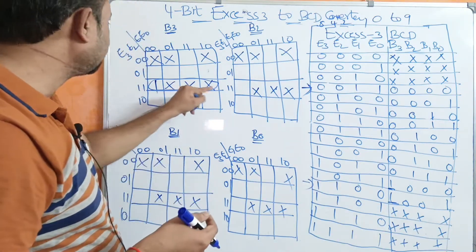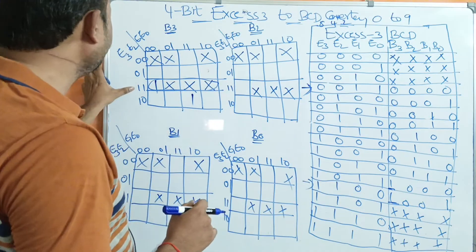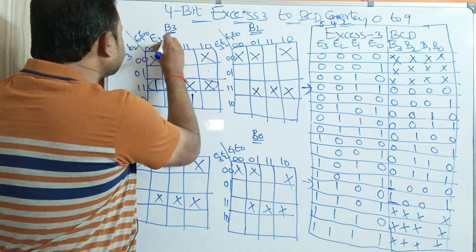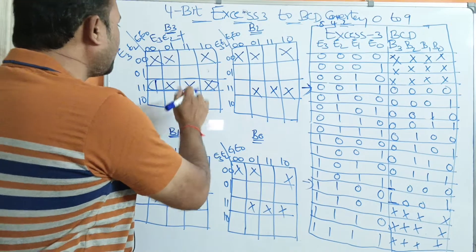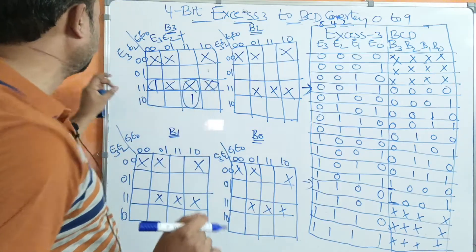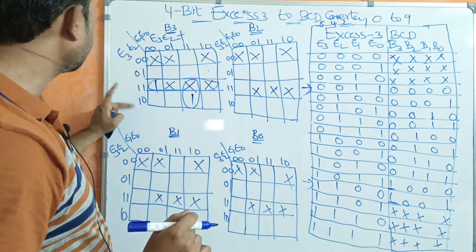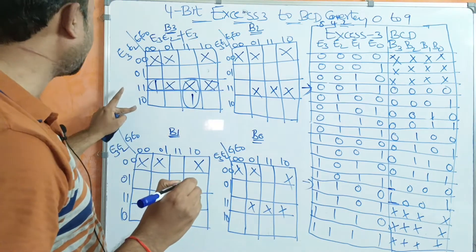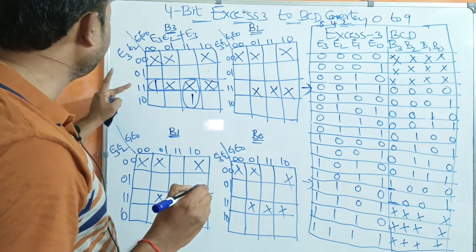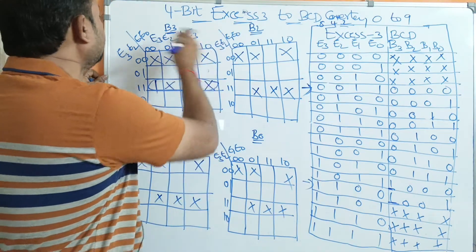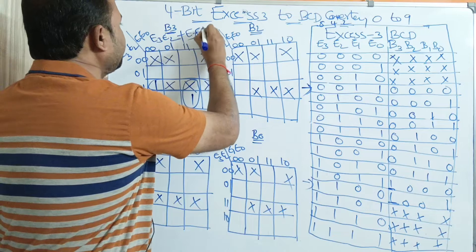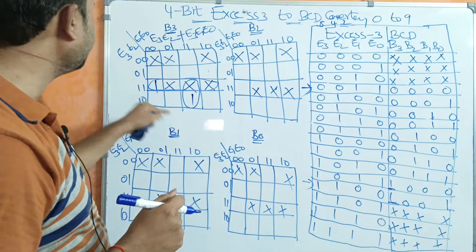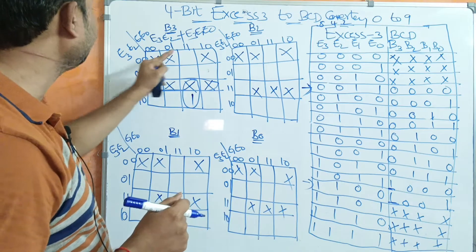So the first group is E3 E2 = 11 for four cells, giving the term E3·E2. Plus, in order to cover the other one, we group two cells where E3 E2 E1 E0 = 1110 and 1011: the common first bit is 1, meaning E3; and the last two bits are 1, 1 meaning E1·E0. So the simplified expression for B3 is: E3·E2 + E3·E1·E0.